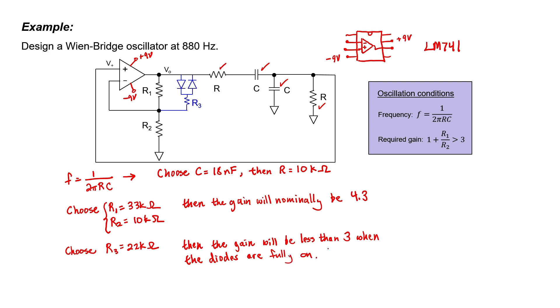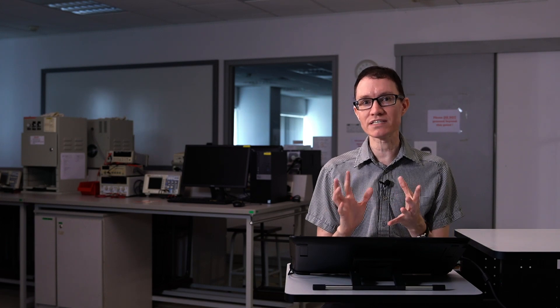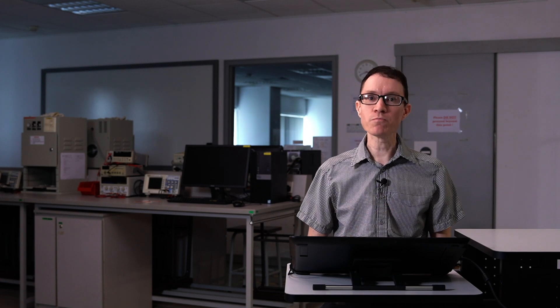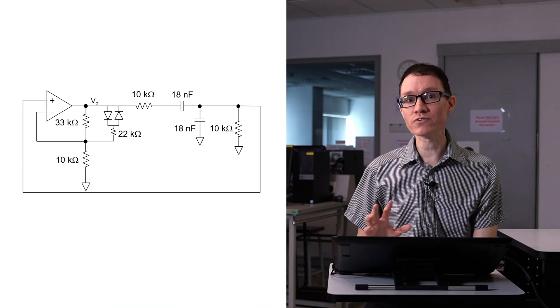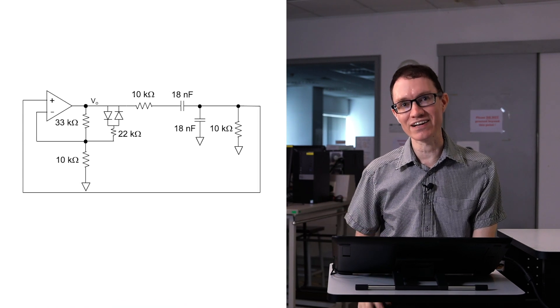This will cause the gain of the amplifier to drop below 3 if the diodes were to fully turn on. But what's actually going to happen when we go and build a circuit is that when the amplitude of the signal gets high, the diodes are never fully going to turn on. Real diodes turn on slowly and the diodes in this circuit are going to be somewhere between being fully on and fully off. We hope to get a good sine wave from this circuit. In the next video, we'll go over to the bench, put the circuit together and see how it performs.